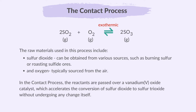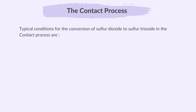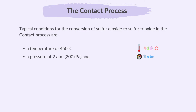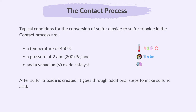In the Contact process, the reactants are passed over a vanadium(V) oxide catalyst, which accelerates the conversion of sulfur dioxide to sulfur trioxide without undergoing any change itself. Typical conditions for this main stage are a temperature of 450 degrees Celsius, a pressure of 2 atmospheres, and a vanadium(V) oxide catalyst. After sulfur trioxide is created, it goes through additional steps to make sulfuric acid. Just like the Haber process, operating conditions must optimize both rate of reaction and equilibrium position, while considering safety and economic factors.